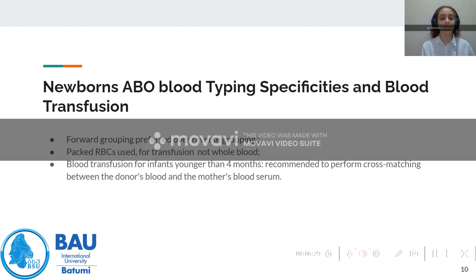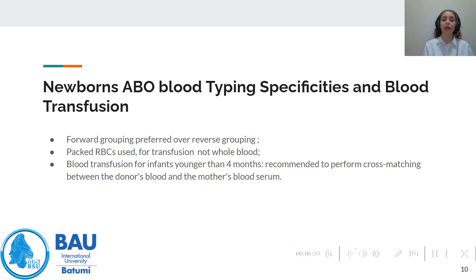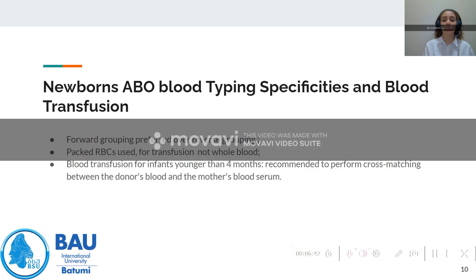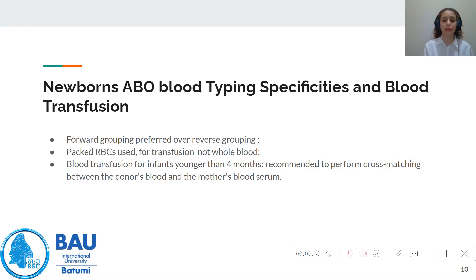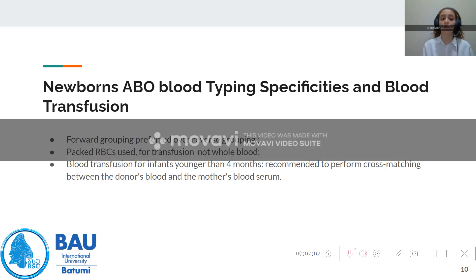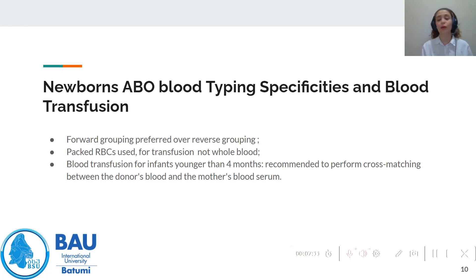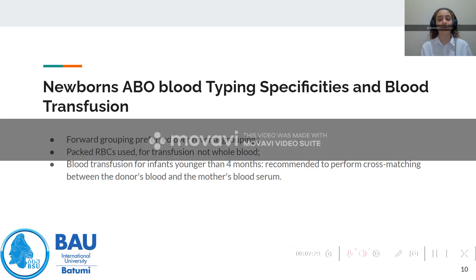Some special points to highlight in blood typing for newborns and blood transfusion: we always opt for forward grouping rather than reverse grouping in newborns, because we want to target antigens on the surface of the RBC rather than antibodies, since maternal antibodies can cause false grouping. We also try to use packed red blood cells rather than whole blood during transfusion. For infants younger than four months, we recommend performing cross-matching between the donor's blood and the mother's blood serum whenever possible.